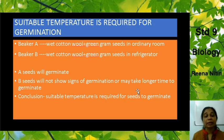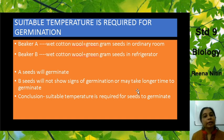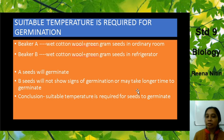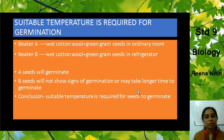Experiment 2 proves that suitable temperature is required for germination. In setup A, place wet cotton wool with green gram seeds and keep it at ordinary room temperature. In setup B, place wet cotton wool with green gram seeds and keep it in the refrigerator. Seeds in A will germinate because they are at proper room temperature. Seeds in B will not germinate, or it might take longer time to germinate. Conclusion: suitable temperature is necessary for seeds to germinate.